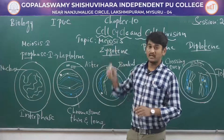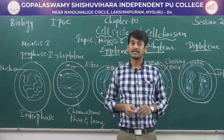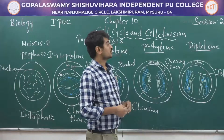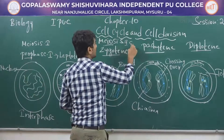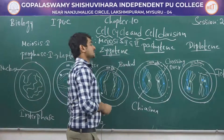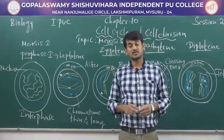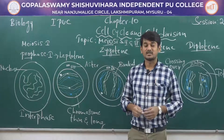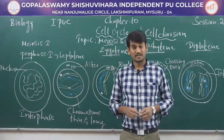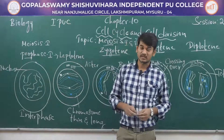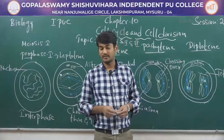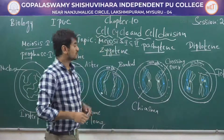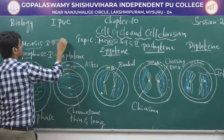Meiosis was first proposed by J.B. Farmer and J.E. Moore in the year 1905. Meiosis takes place in two types: meiosis I and meiosis II. In meiosis I, the parental cell gives rise to two haploid daughter cells. Meiosis I is followed by sub-stages: prophase I, metaphase I, anaphase I, telophase I, and cytokinesis I. Meiosis II includes prophase II, metaphase II, anaphase II, telophase II, and cytokinesis II. In meiosis I, the diploid parental cell gives rise to two haploid daughter cells.